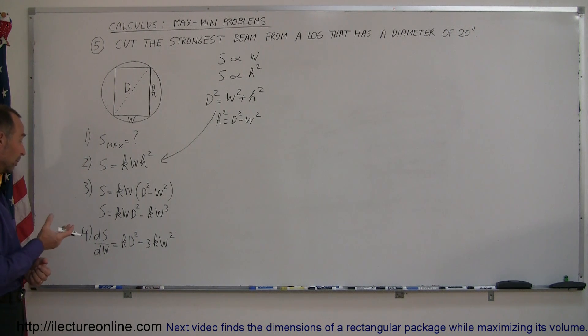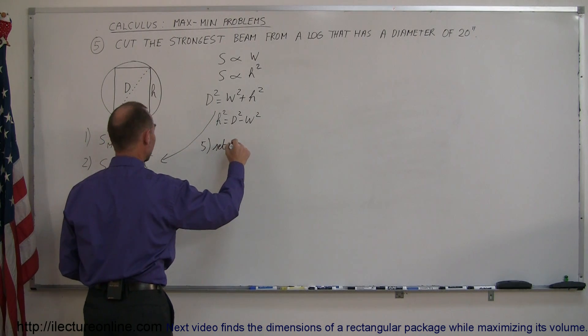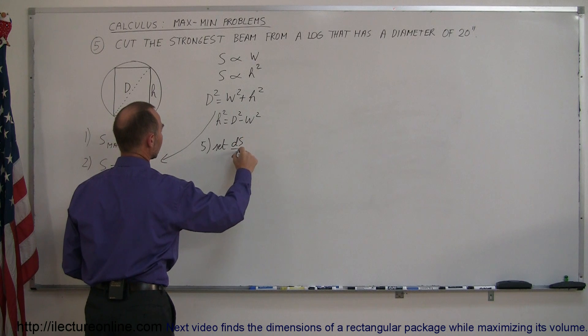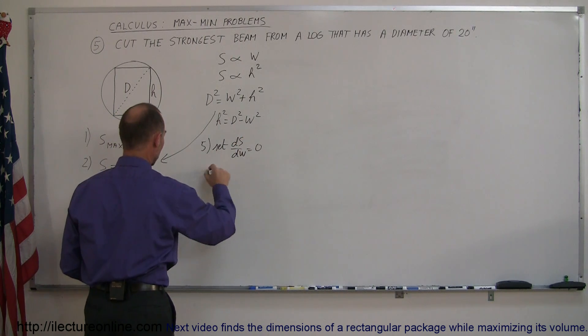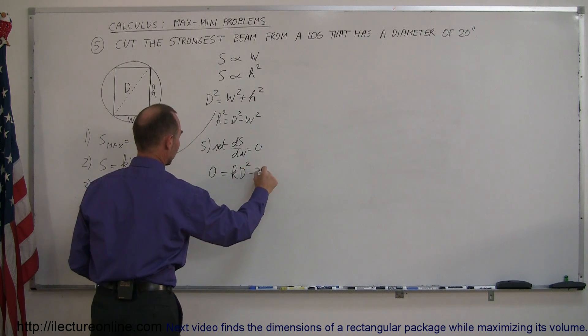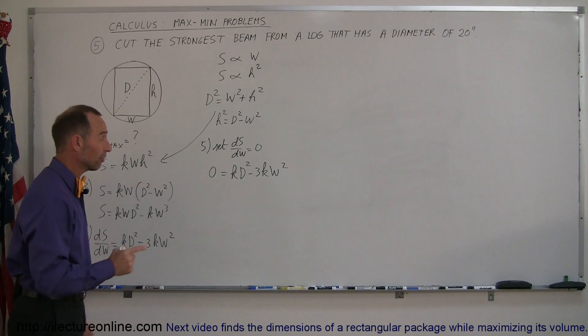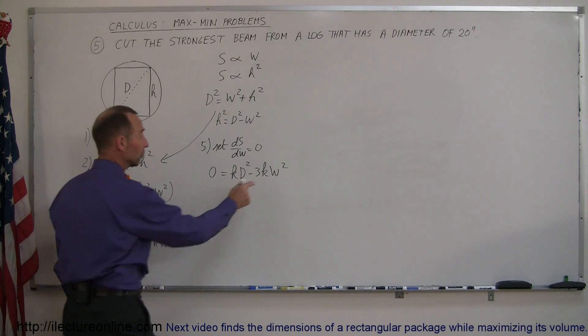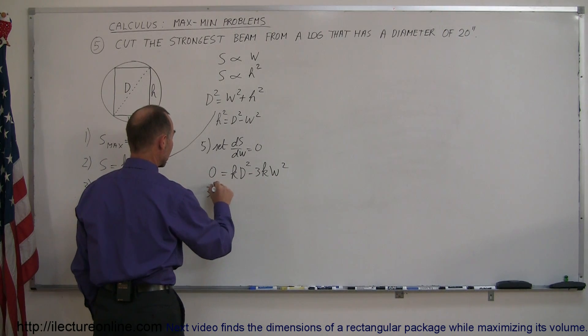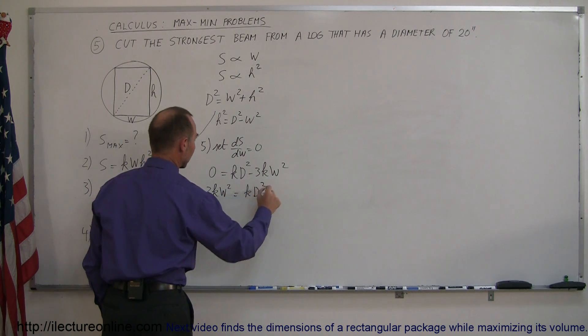Now the next step would be to take that equation and set it equal to 0. So step 5: we set the derivative dS/dw equal to 0. When we do that, we get 0 equals kd² minus 3kw². All right, we have to solve that one for w. So let's move this over to the other side. So we have 3kw² is equal to kd².